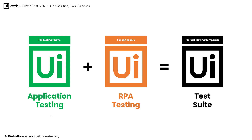No, the UiPath test suite is also a solution for RPA teams to help them to test their robotic process automation more efficiently and more effectively. That is what we call RPA testing. So in short, the UiPath test suite is one solution that serves two purposes: application testing and RPA testing.